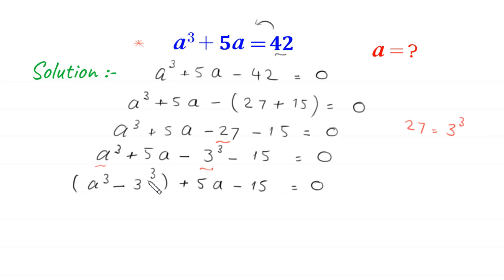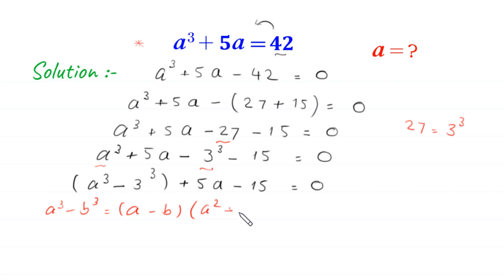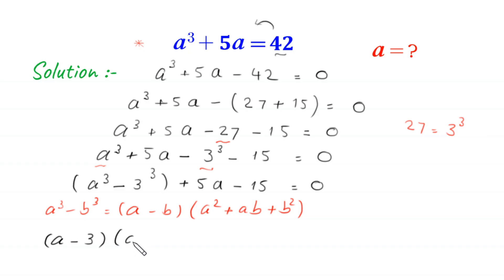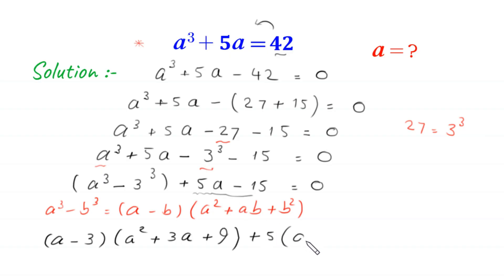We have a difference of two cubes. So by using the algebraic identity a cubed minus b cubed equals a minus b times a squared plus ab plus b squared, this a cubed minus 3 cubed will become a minus 3 times a squared plus 3a plus 9. From the two terms 5a minus 15, we can factor out plus 5, leaving a minus 3 in the bracket, equal to 0.